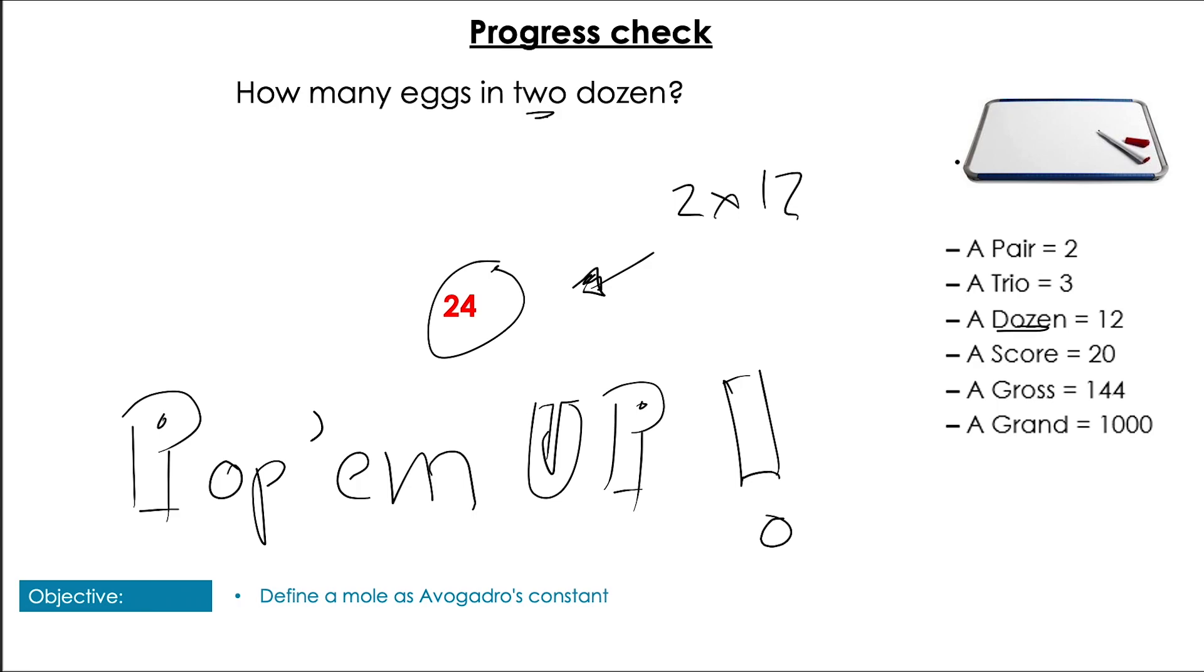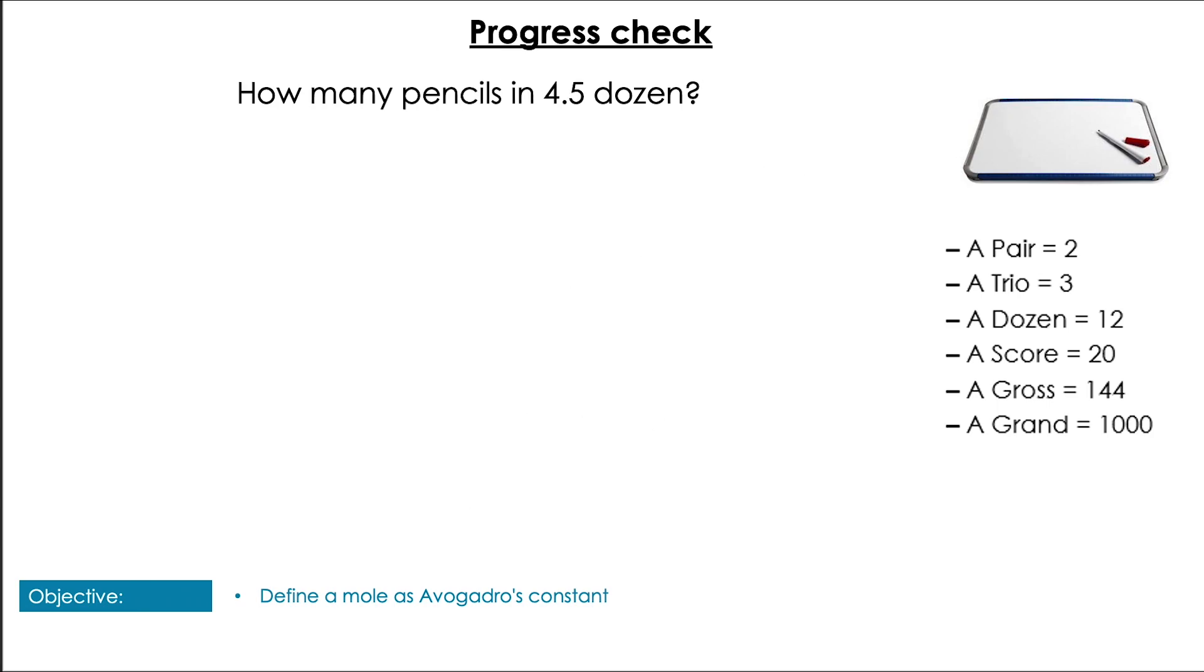So I'm going to give you a moment and we're going to go through with the same process again. It's going to be a question, a pause, on the pause you can attempt the question. Here we go. How many pencils in four point five dozen? Pause the video to give yourself a moment for that. Pop them up! Yeah that's what I'm talking about. Now hopefully you saw that a dozen was twelve and so four point five times twelve equals fifty four.